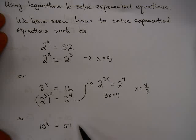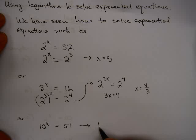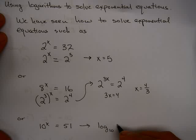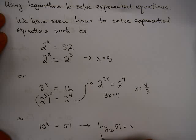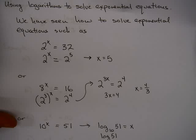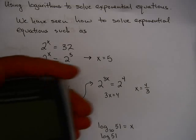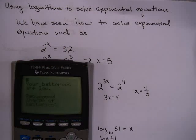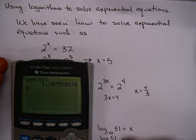We also saw that for 10^x = 5, we could rewrite this using the logarithm — it's really asking what power we raise base 10 to in order to get 5. Your calculator has log base 10, sometimes known as the common log. So you can pull out your calculator and compute log(5), which gives approximately 1.708.